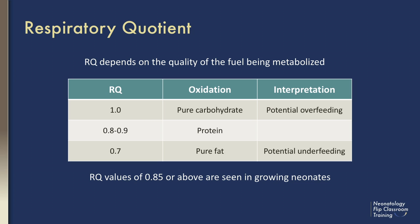This may raise the minute ventilation, increasing work of breathing, and/or leading to increased ventilatory support. A respiratory quotient of 0.5 or greater is typically seen in growing premature infants on full enteral feeds.